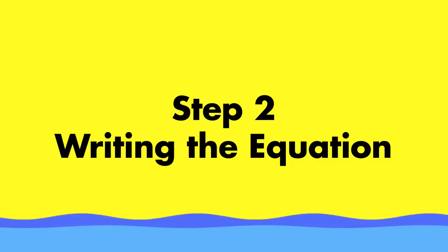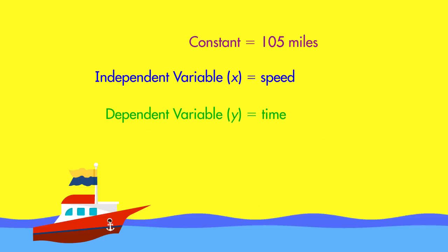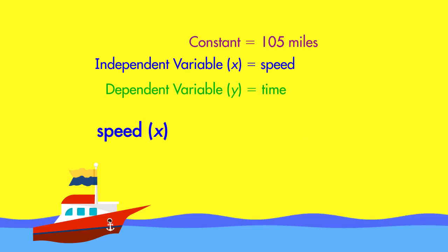Next, use the variables to write an equation. Multiply the boat's speed by the number of hours the boat will travel to find the total distance, or 105 miles. So the equation is speed, or X, times time, or Y, equals 105.